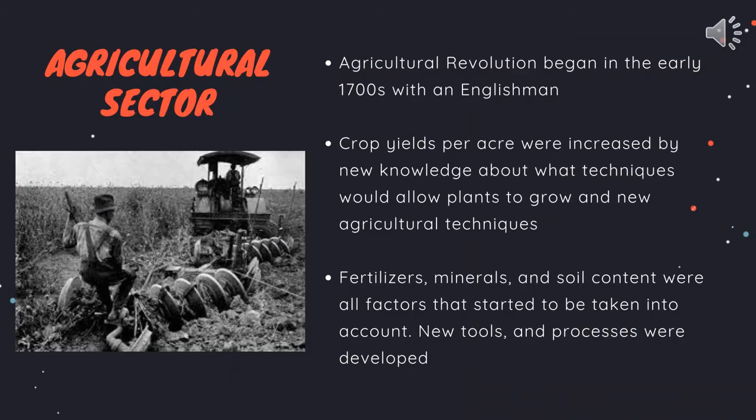Now let's proceed to the agriculture sector. The agriculture revolution began in the early 1700s with the Englishman. Crop yields per acre were increased by new knowledge about techniques that would allow plants to grow. New agriculture techniques — fertilizer, minerals and soil content — were all factors that started to be taken into account.